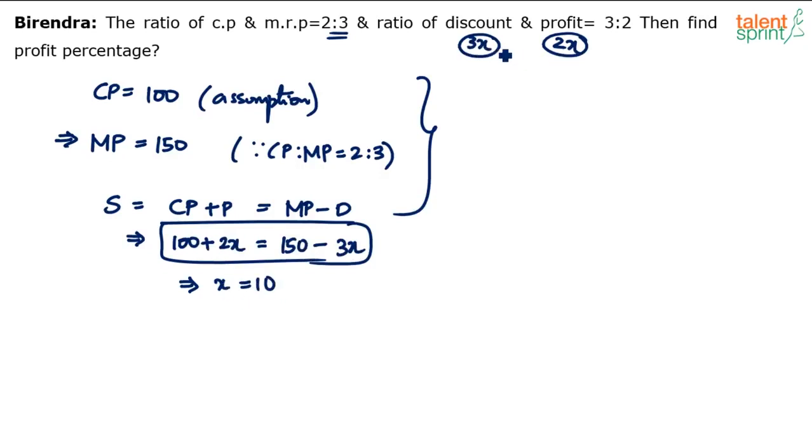That's it. So you know that the discount is what? Discount is 30 and the profit is 20. This becomes 30 and the profit is 20. What is he asking us to find out? Find the profit percentage.